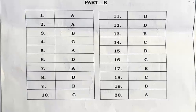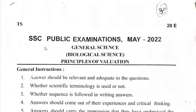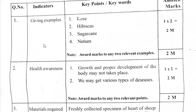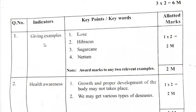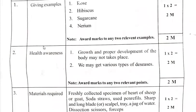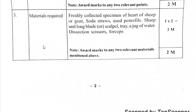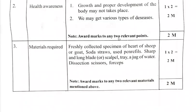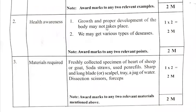This is the bio paper. Here you can see Section 1 — one-mark questions and Section 2 — two-mark questions. Note the instructions: award marks to any two relevant points. Only two points are given here, so for writing any two relevant points you should get two marks.